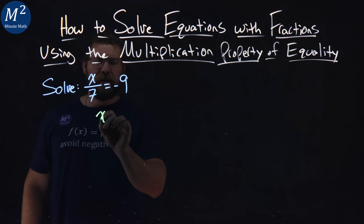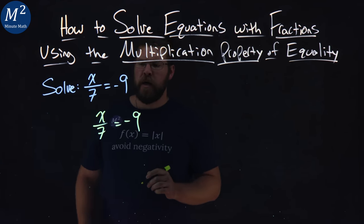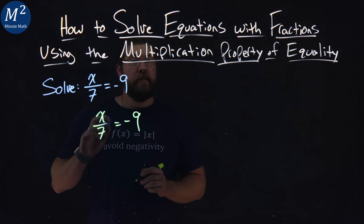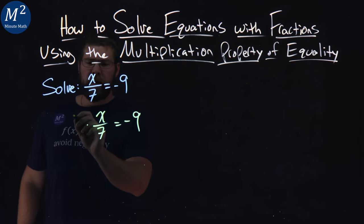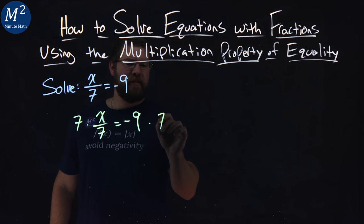So let's rewrite this. x over 7 equals negative 9. Well, I want to get rid of the 7 in the denominator. So to do that, multiply the left side by 7 and 7 to the right side.